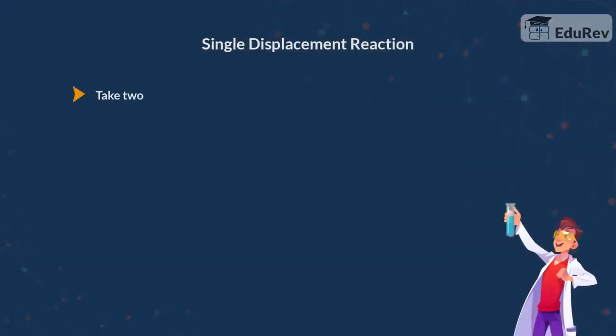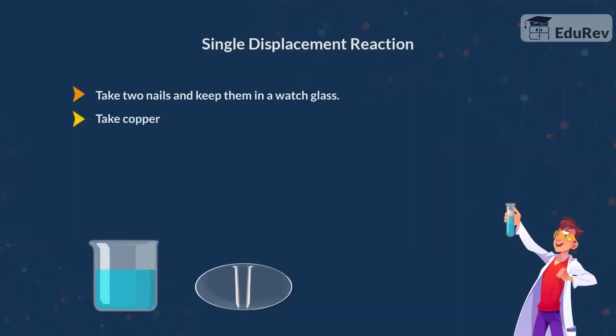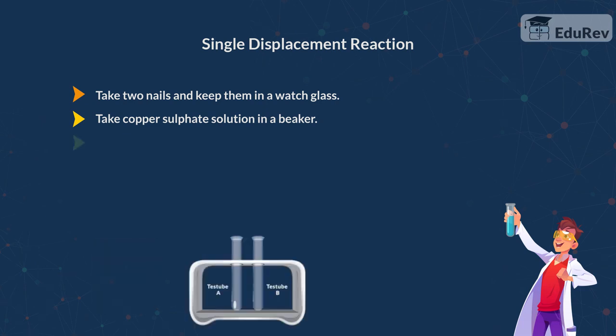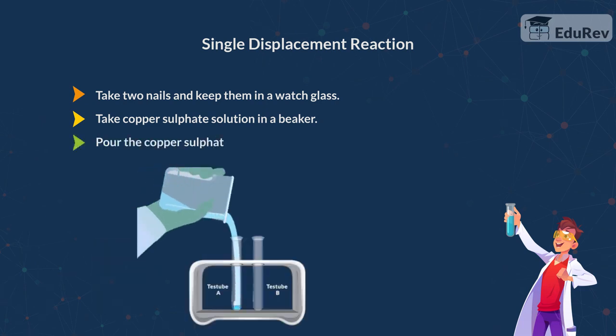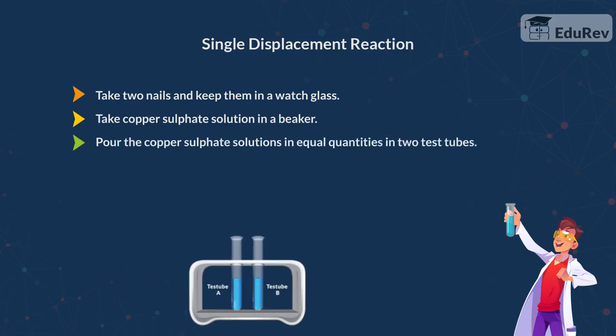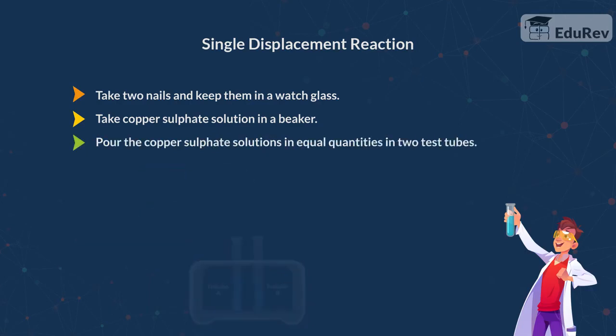Here you have two iron nails and a copper sulphate solution in a beaker. Let's get our inquisitive mind out and find what happens when these two reactants mix with each other. Let's pour the copper sulphate solution in equal quantities in two test tubes, about 10 ml in each test tube.